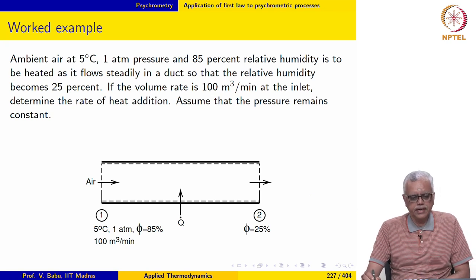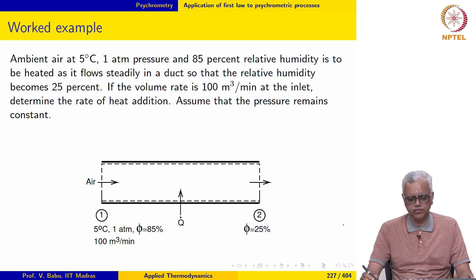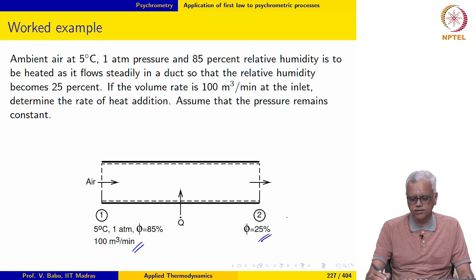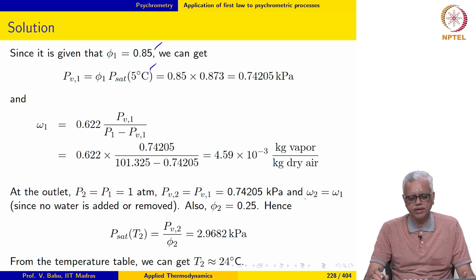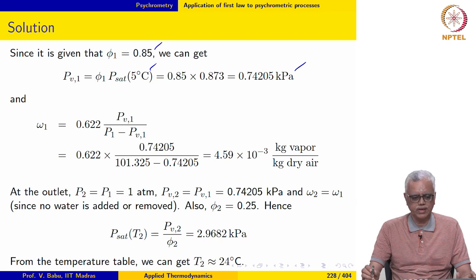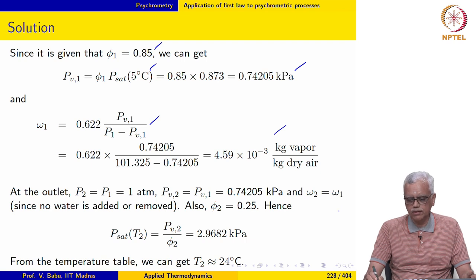First steady-flow example: ambient air at 5°C, 1 atmosphere and 85% relative humidity is heated as it flows steadily in a duct so that the relative humidity becomes 25%. The volume flow rate is 100 m³/min at the inlet; determine the rate of heat addition at constant mixture pressure. At the inlet, Psat(5°C) is looked up and the partial pressure of water vapour is 0.74205 kPa, giving a humidity ratio of 4.59 g of vapour per kg of dry air.